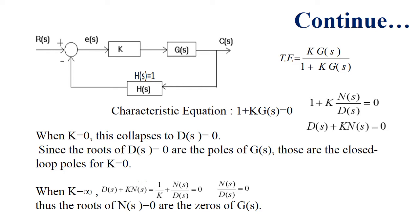By changing that parameter, you are going to be changing the location of poles of the system. Poles of the system are values of S that cause the transfer function to be divided by zero or blow up to infinity. If we put K equals to zero in the transfer function, this collapses to the characteristic equation — the denominator of the system equals zero. Since the roots of the denominator are the poles of G(S), those are the closed-loop poles for K equals to zero.